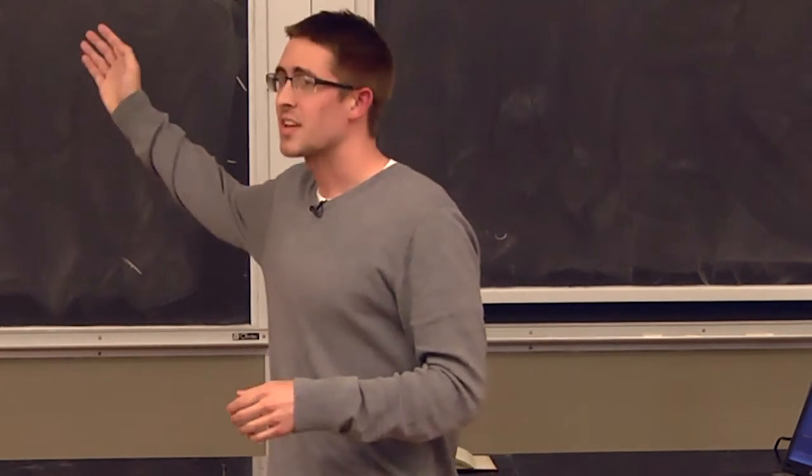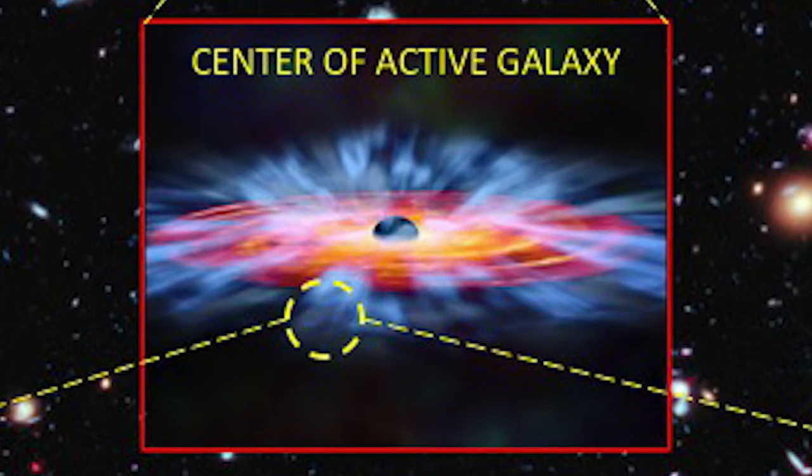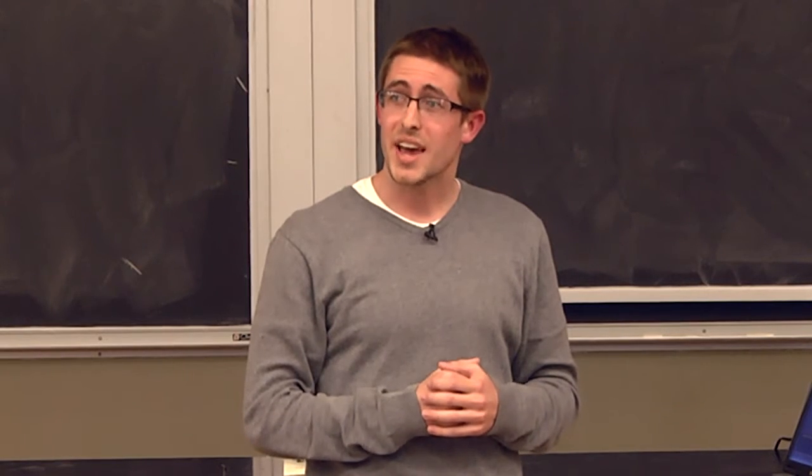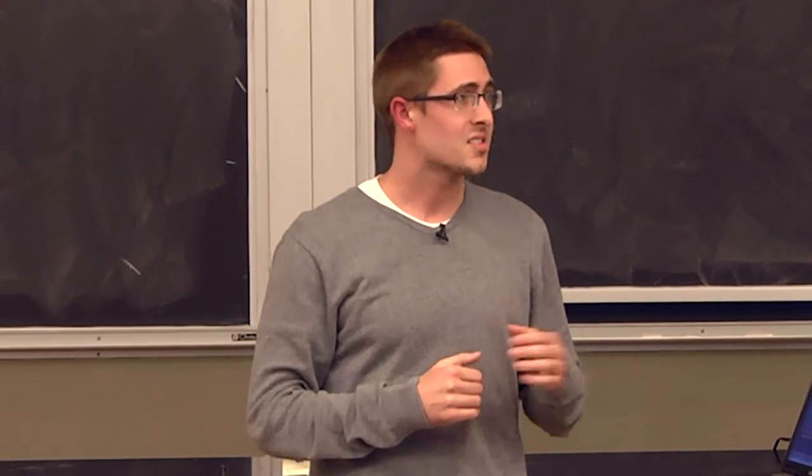This is what we think the center of an active galaxy looks like. In the middle is a black hole. The orange is gas falling toward the black hole, just like things fall toward the Earth. This orange gas produces the bright light in the centers of active galaxies.